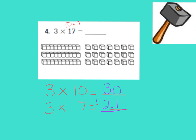Now, let's add them to make the final product. I know that 30 plus 21 gives me 51. So 51 is the product of 3 and 17, which is our final answer. Great job.